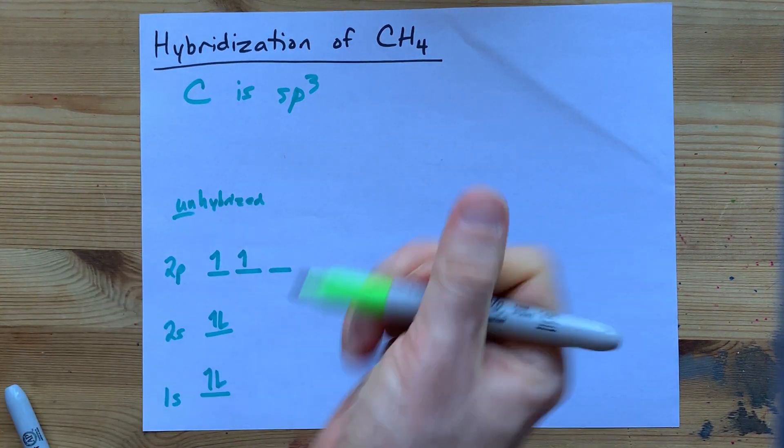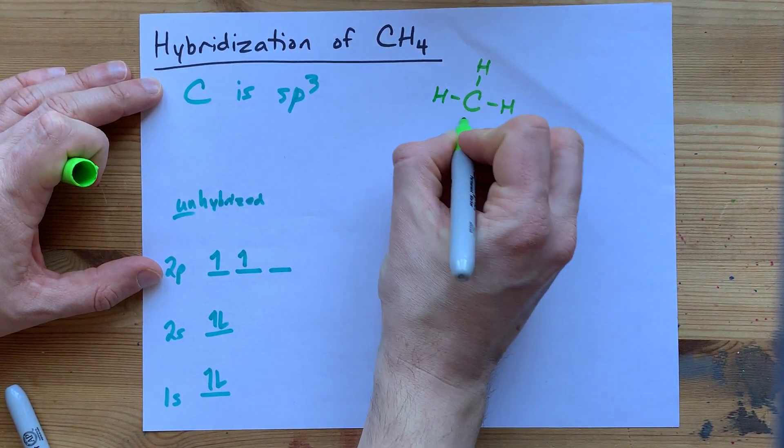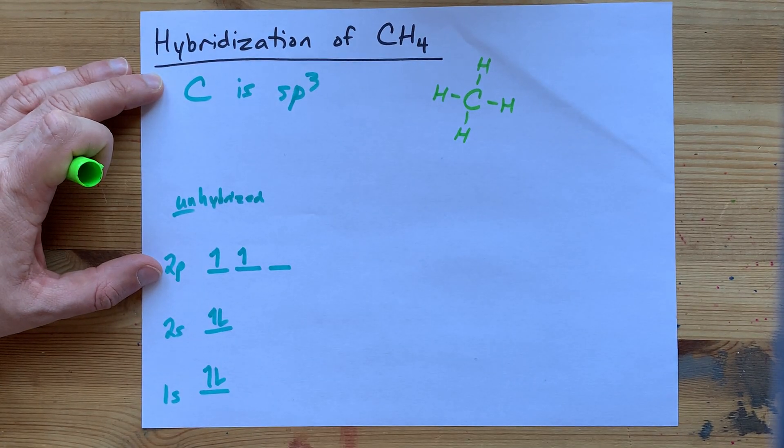In methane CH4, you have a carbon single bonded to four different hydrogens. Now, hydrogens don't hybridize, so we're not even going to bother with that.